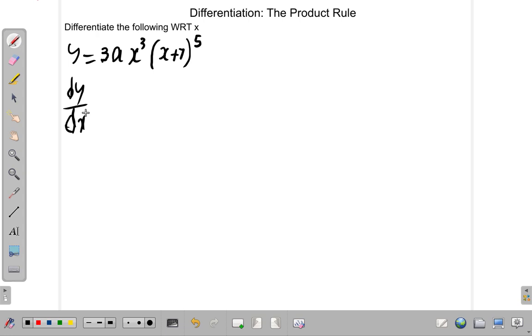So any other letter you see, you just regard it as a number, as a constant. Just like the 3 is a constant here, the a is a constant. Whatever other letter you see is a constant. Only x and y are changing. So, here now, we begin.